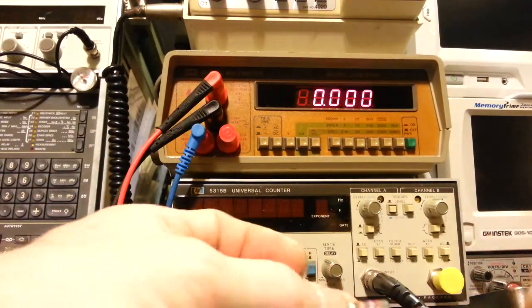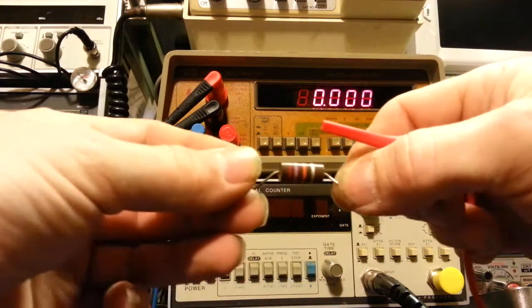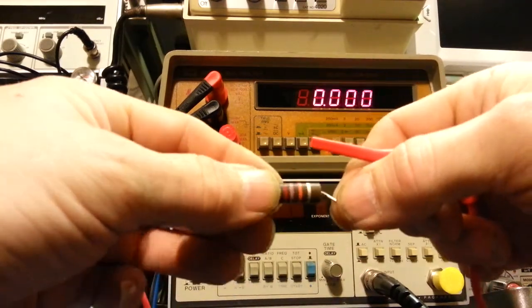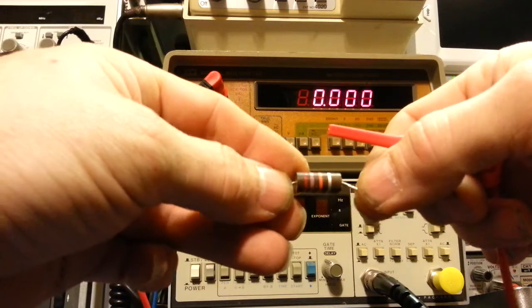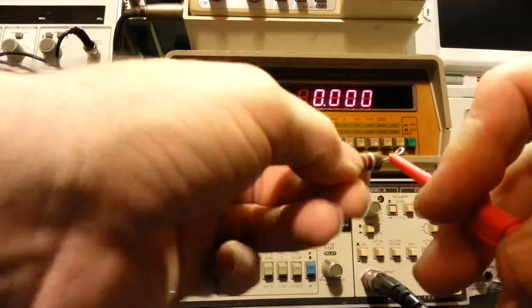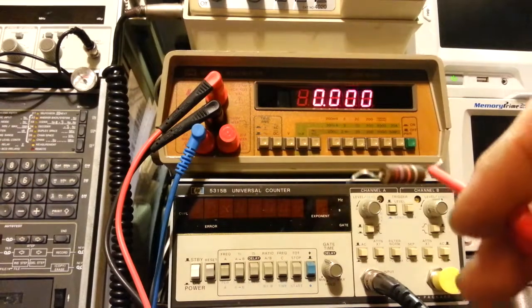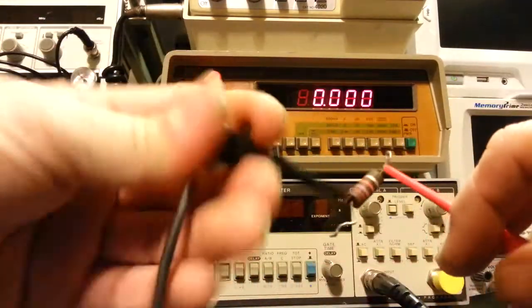Okay, we have here, get it in camera, red, violet, orange. So that's 2, 7, so that's going to be with the 3, 27,000 ohms. So let's see. I think there's two of those. We'll see what they measure.